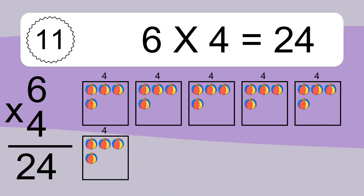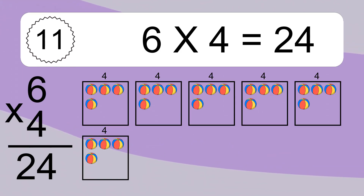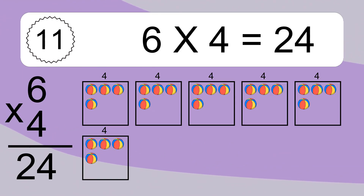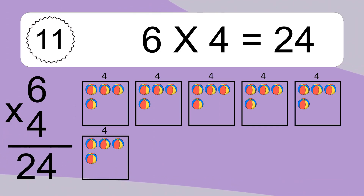6 times 4 equals what? We have 6 boxes, and each box has 4 colorful balls inside. If you count all the balls in all the boxes together, you will have 6 times 4 balls. This equals 24 balls.